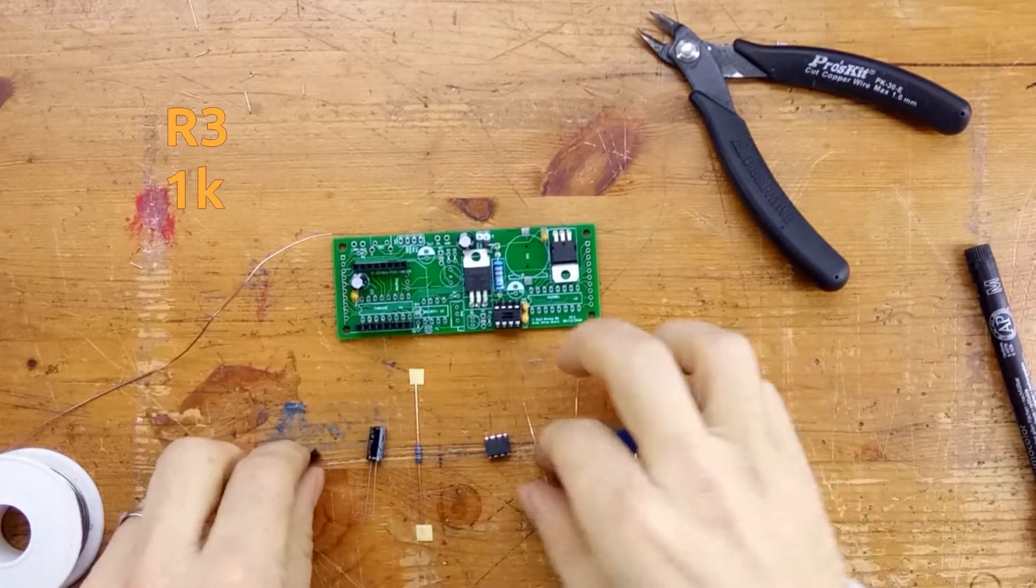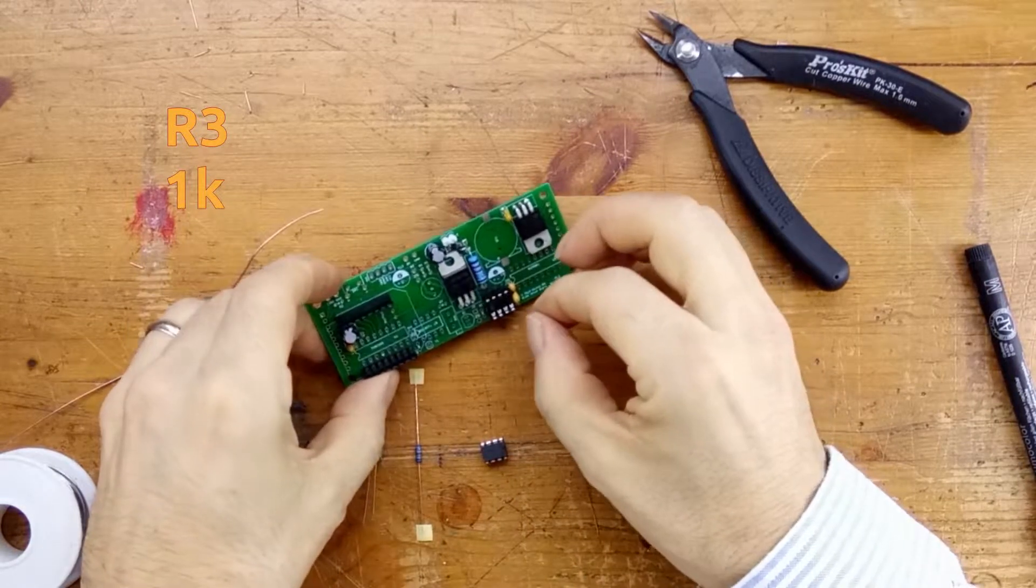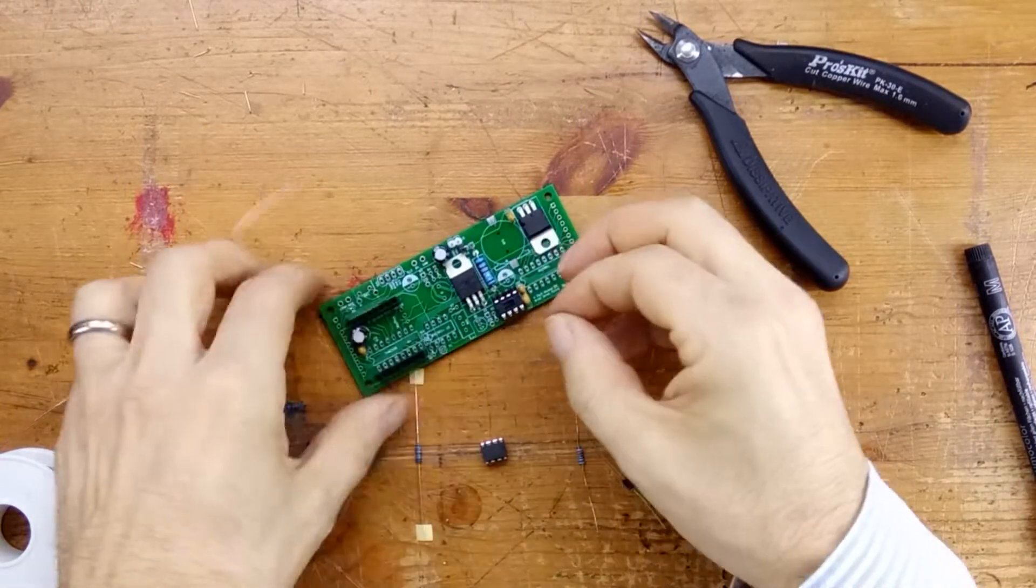Next we take R3, which is a 1K resistor, and we fold the leads over, and we put it into its place next to the socket.